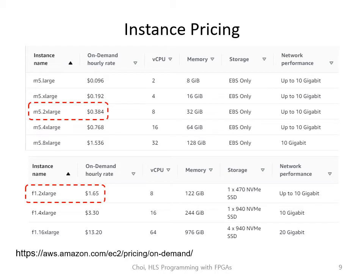As of summer 2021, F1.2xlarge on North Virginia costs $1.65 per hour. But M5.2xlarge, which has a similar compute capability, only costs $0.384 per hour. Since AFI creation typically takes many hours, you may want to spend most of your time using a cheaper server, M5.2xlarge, and run an F1 instance only when needed. But this really depends on how tight your budget is.